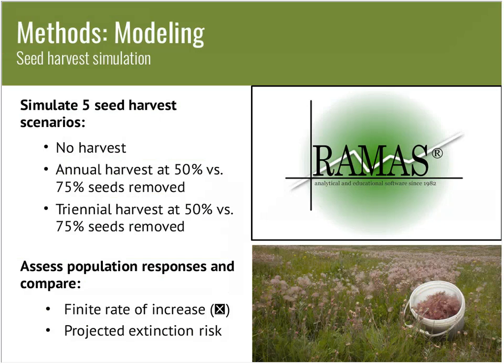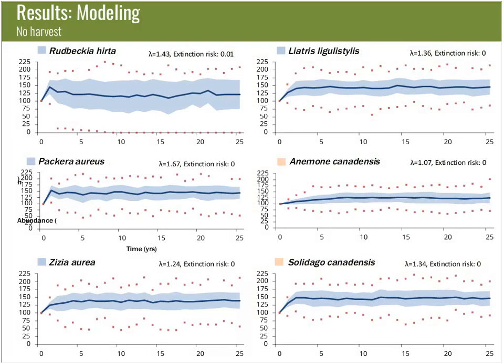Once the matrix models were fully parameterized, I subjected the modeled populations to five seed harvest scenarios using the Ramas Metapop program, simulating seed harvest by reducing seed reproduction transitions by either 50 or 75% every year or every three years. This allowed me to look at how populations responded to both increasing frequency and intensity of seed harvest. I conducted a thousand runs of each scenario for each population and then compared the finite rate of increase, or lambda, which is a measure of population growth, and the projected extinction risk over 25 years.